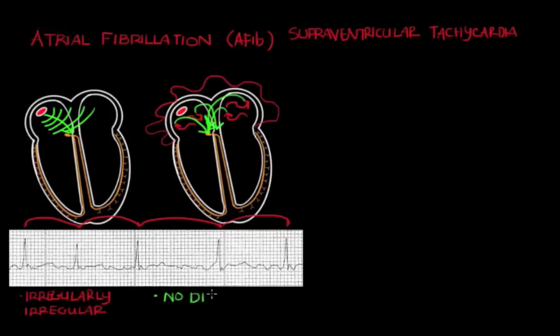Also in AFib, there are no distinct P waves on EKG. Instead, you have these coarse squiggly lines running through. But there are no distinct P waves.